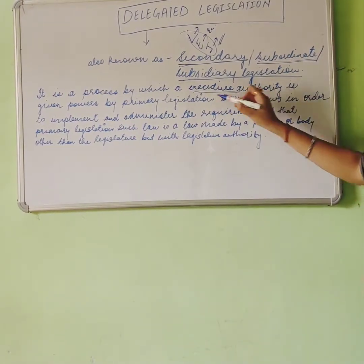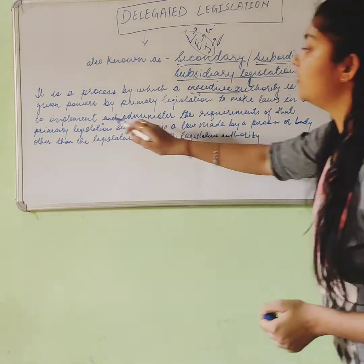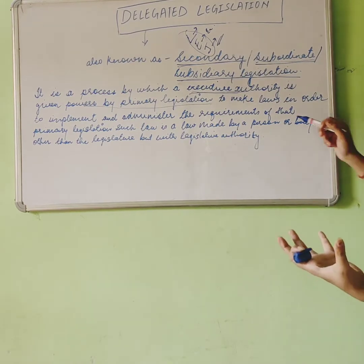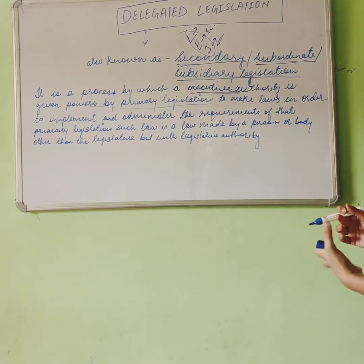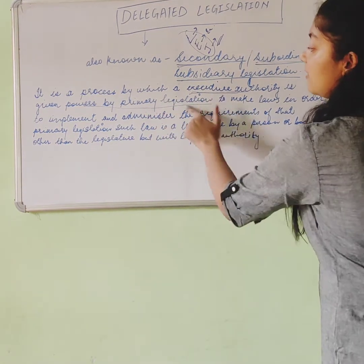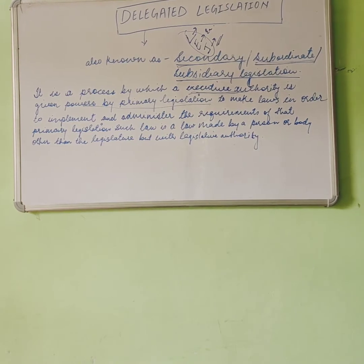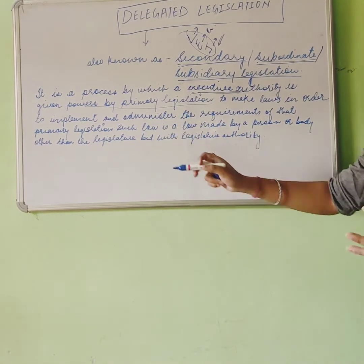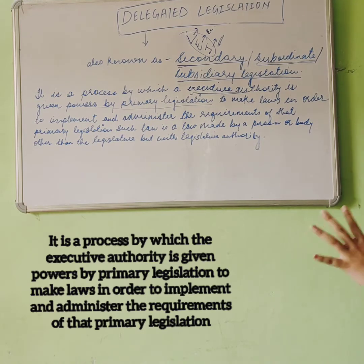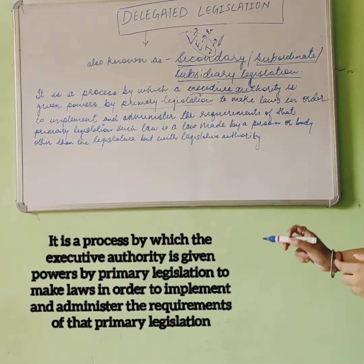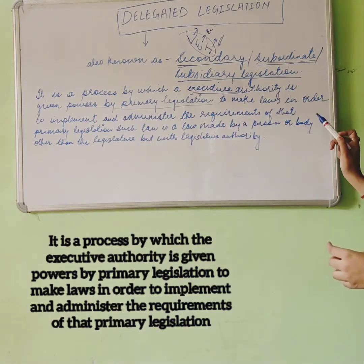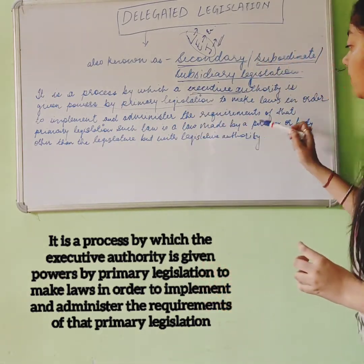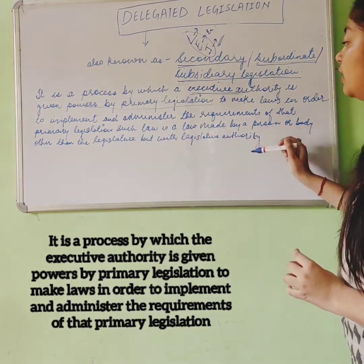Delegated legislation is a process by which an executive authority is given power, passed by primary legislation, to implement and administer the requirements of that primary legislation. Such law is made by a person or body other than the legislature but with legislative authority.